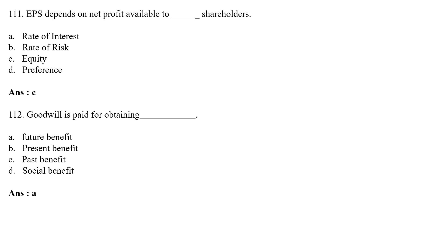EPS (Earnings Per Share) depends on net profit available to dash shareholder — Option A: rate of interest; Option B: rate of risk; Option C: equity; Option D: preference. The correct answer is Option C — equity. Earnings per share depends on net profit available to equity shareholders.